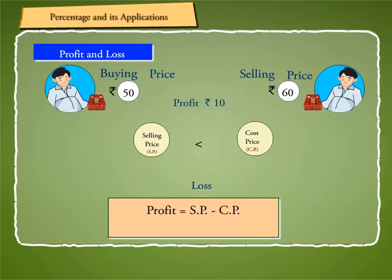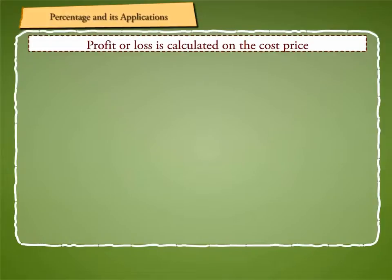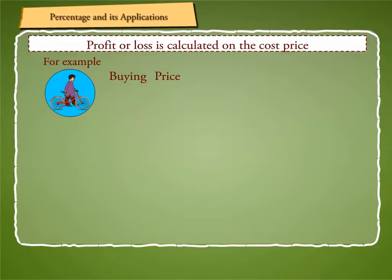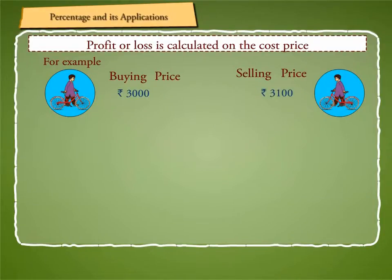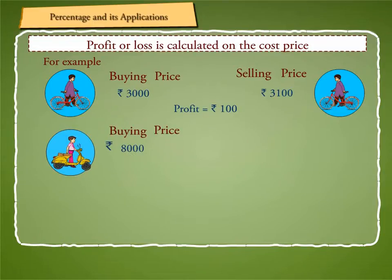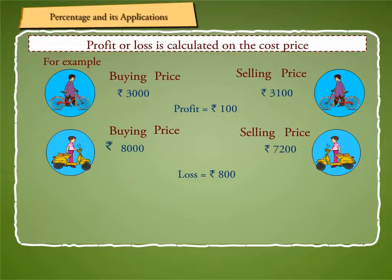In other words, profit is equal to SP minus CP. Loss is equal to CP minus SP. It is important to note that profit or loss is calculated on the cost price. For example, if a man buys a cycle for Rs. 3,000 and sells it for Rs. 3,100, he makes a profit of Rs. 100 on an investment of Rs. 3,000. If another man buys an old scooter for Rs. 8,000 and sells it for Rs. 7,200, he loses Rs. 800 on an investment of Rs. 8,000.